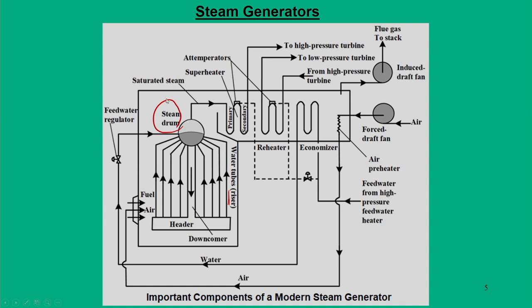To get superheated steam we have superheaters, which are another unit of the entire water-steam generating system. In some cases we want the steam to be reheated - after it comes from the high pressure turbine it again passes through the low pressure turbine. So some reheating is done using a reheater. These are the major two units that operate beyond the saturated dome.